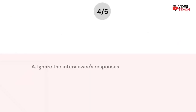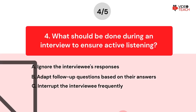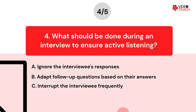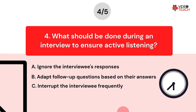Question number four. What should be done during an interview to ensure active listening? Option A: Ignore the interviewee's responses. Option B: Adapt follow-up questions based on their answers. Option C: Interrupt the interviewee frequently. Now you have about 15 seconds to think about your answer.